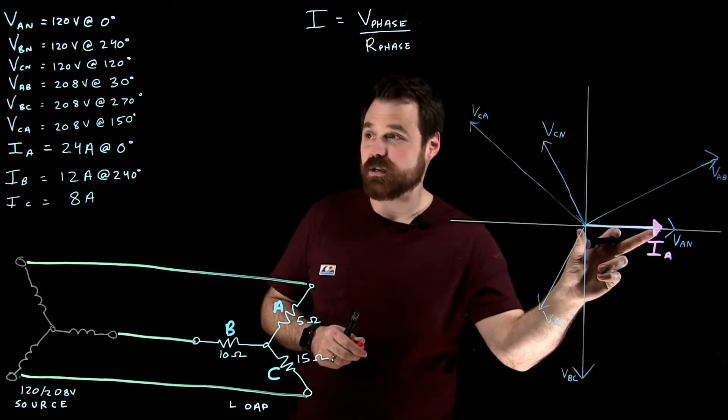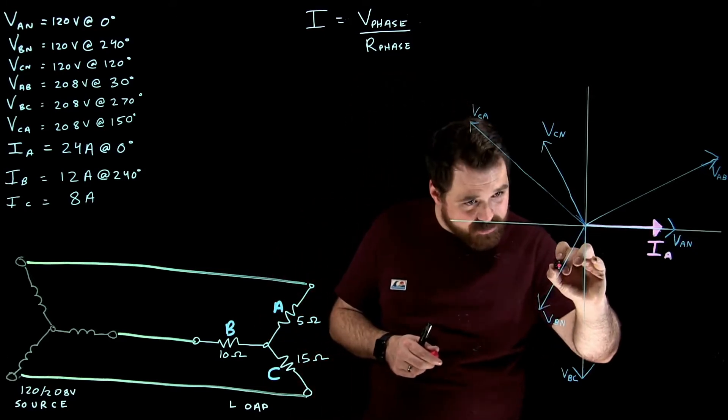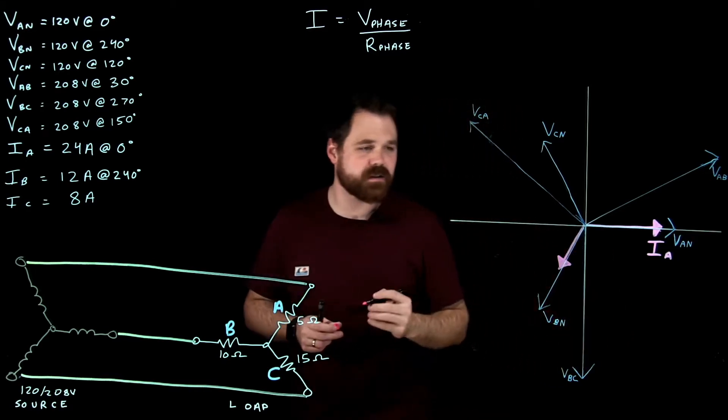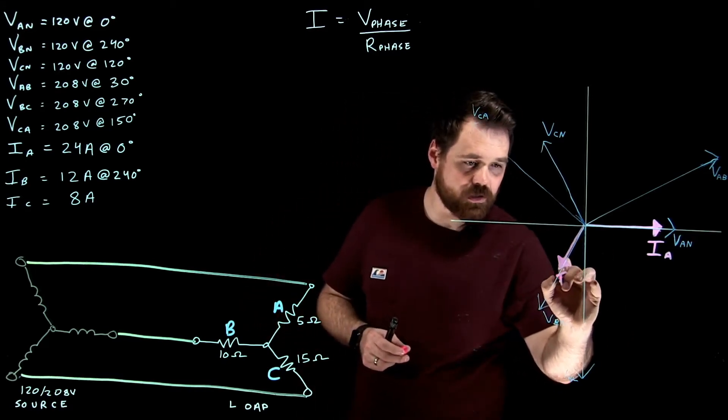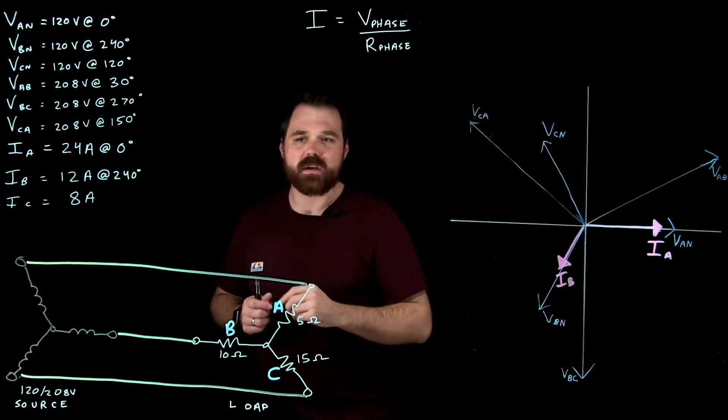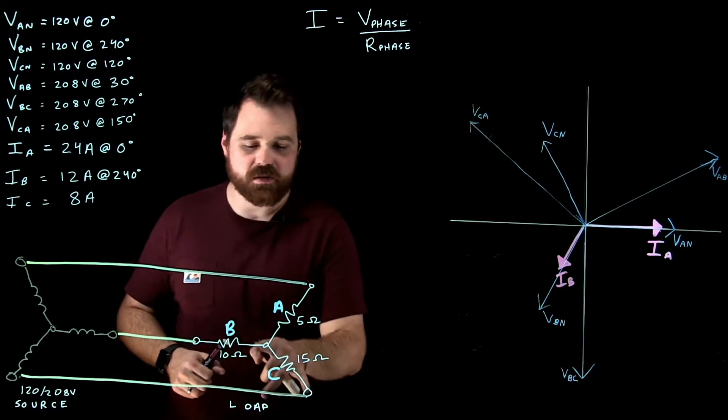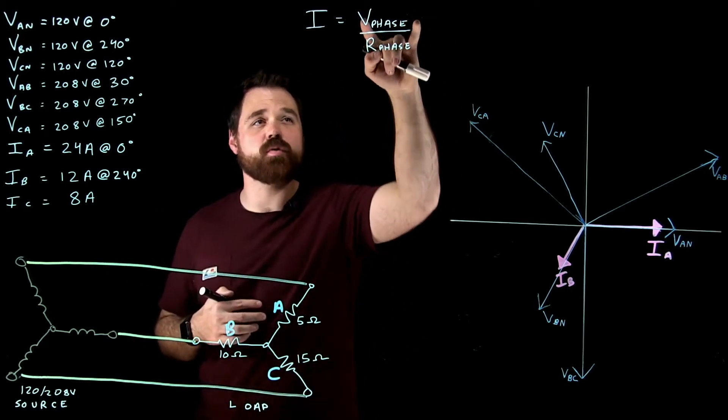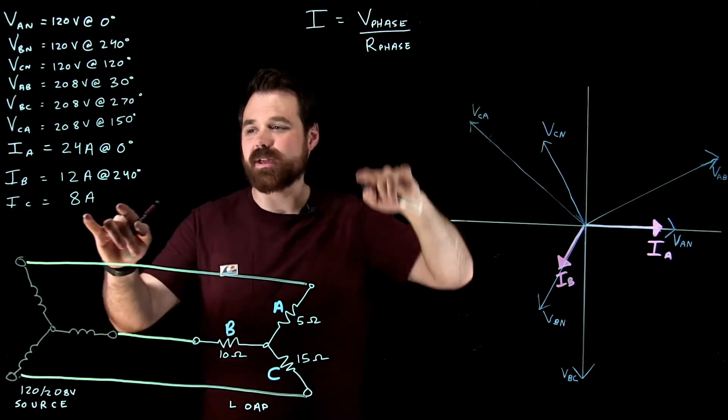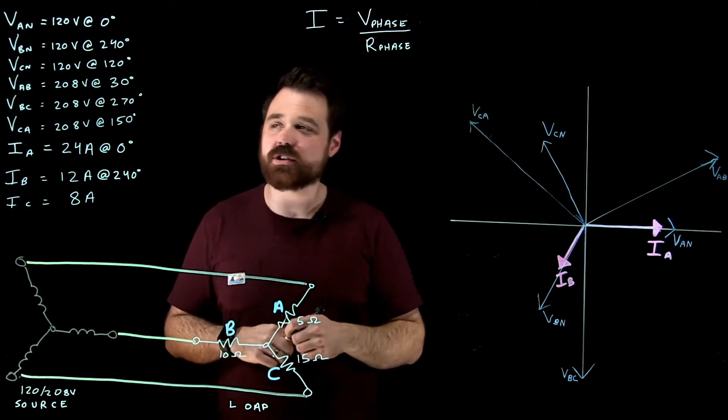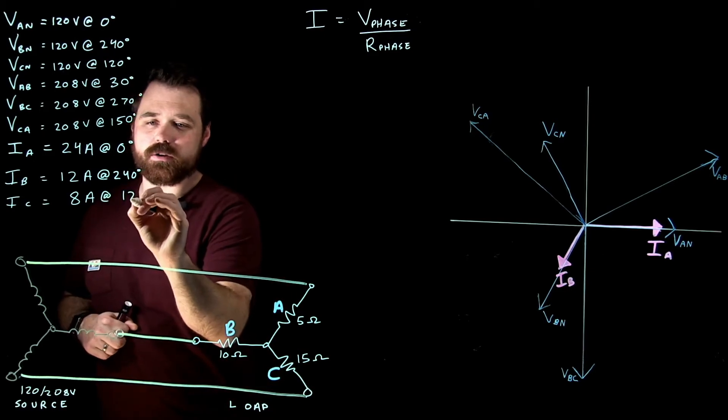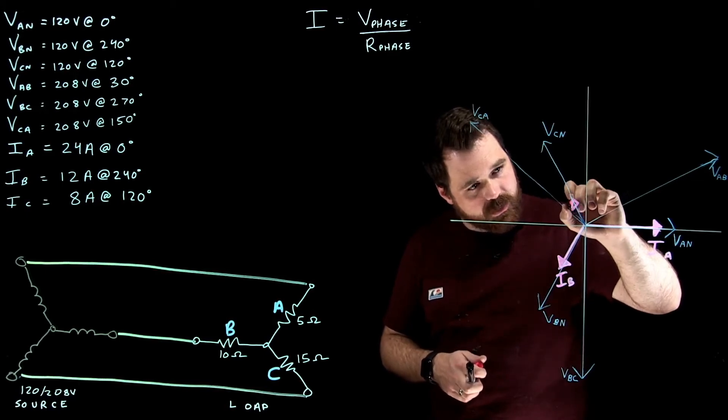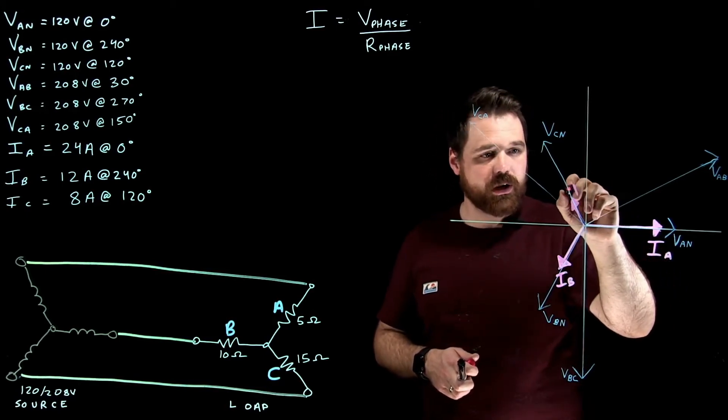Now, this one here was 24 amps. This one is 12 amps, and it's going to be about half the length. And I should have done a different scale, but that's okay. IB, and then IC, I'm going to do the same thing across phase C. I use my C phase voltage, 120 divided by my 15 ohms, gave me eight amps. And that is in phase with the voltage. So that's going to be at 120 degrees. So I punch that in up here. IC.